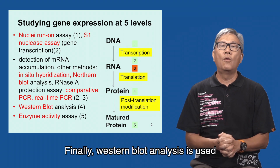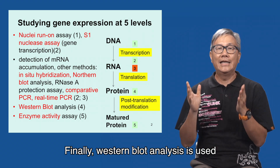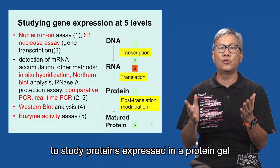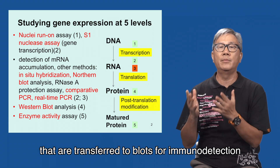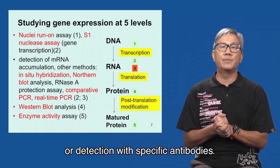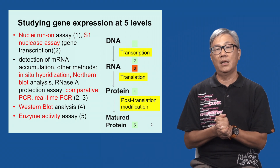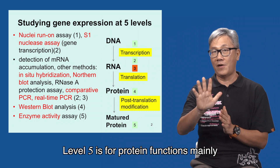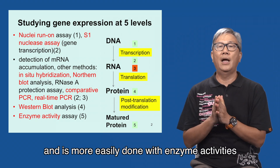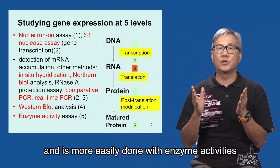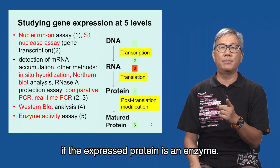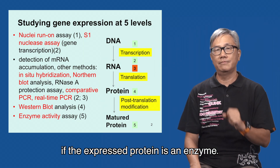Finally, western blot analysis is used to study proteins expressed in a protein gel that are transferred to blots for immunodetection or detection with specific antibodies. Level five is for protein functions mainly, and is more easily done with enzyme activities if the expressed protein is an enzyme.